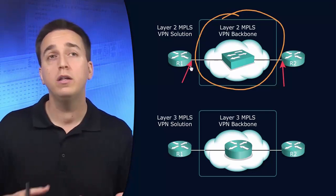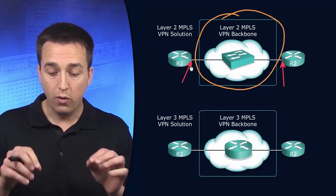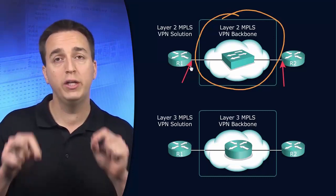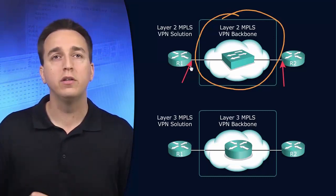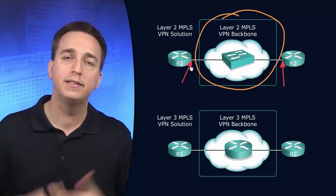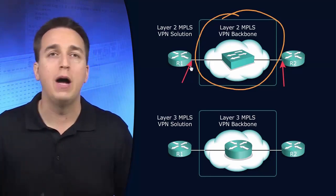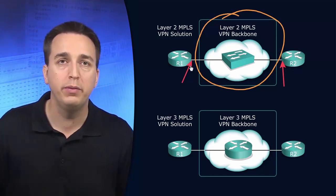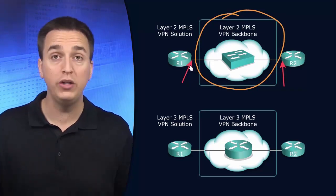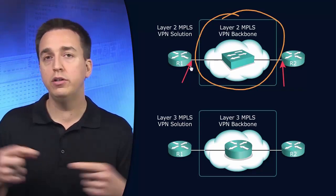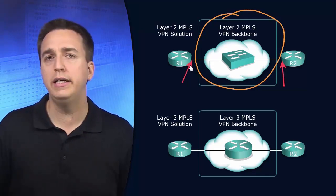As a result, if you're implementing any type of dynamic routing protocol, we're going to have neighborships formed between these two routers over that Layer 2 MPLS VPN backbone. There are two different options for Layer 2 MPLS VPN connectivity. You have your point-to-point Layer 2 MPLS VPN solution, like we see here.